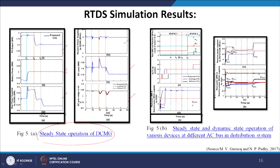For steady-state and dynamic-state operation of various devices at different AC buses of the distribution system, we have traced the real and reactive power at bus numbers 5 and 22, OLTC tap positions and how they keep changing, real and reactive power by the DC microgrid, reactive power supplied by the DSTATCOM, and real and reactive power supplied by the wind generator.